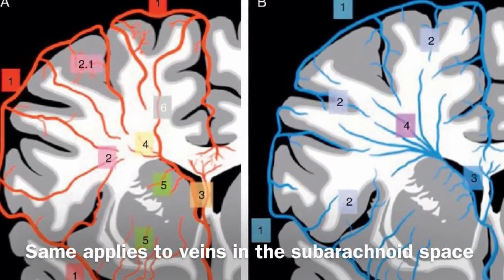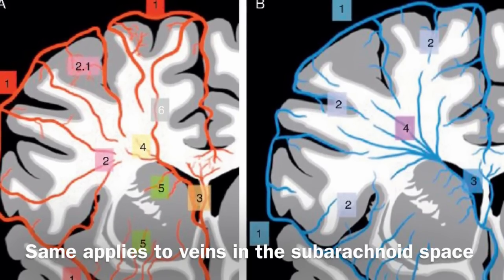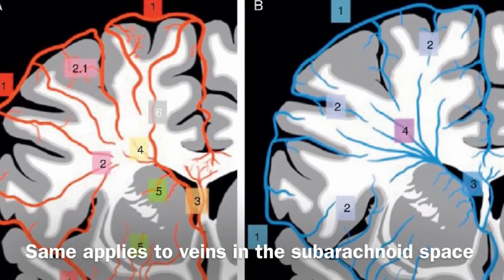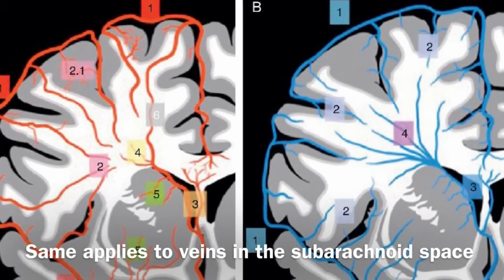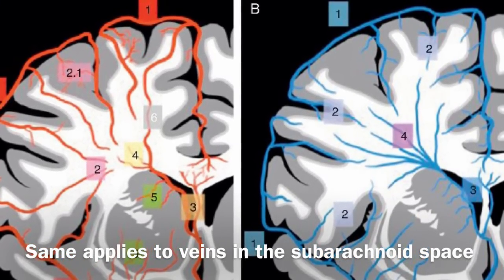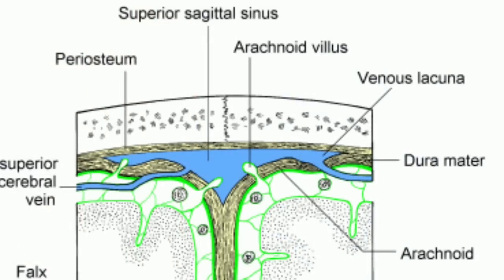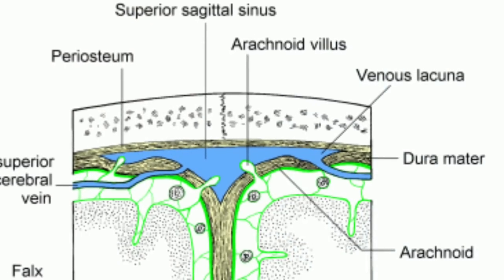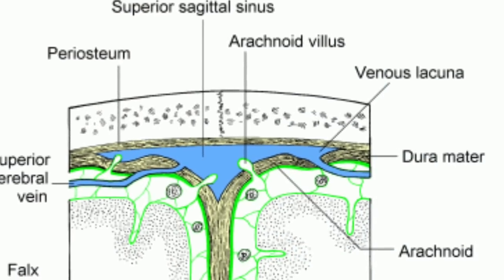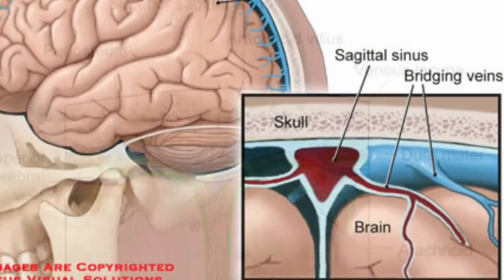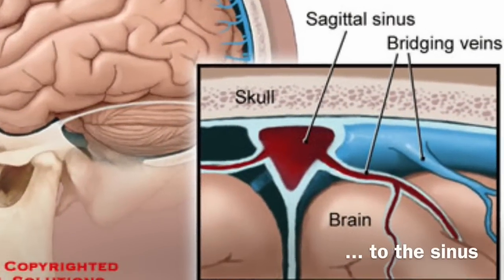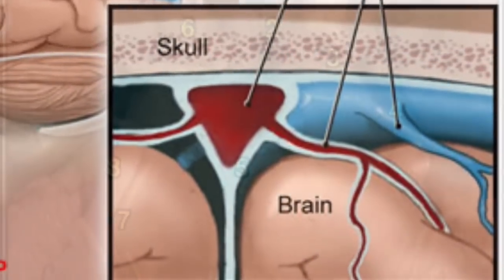The same applies to veins — they also travel in the subarachnoid space. These veins in turn drain into the dural venous sinuses.